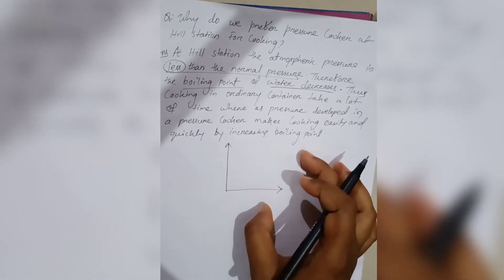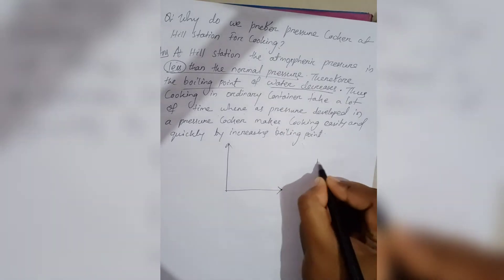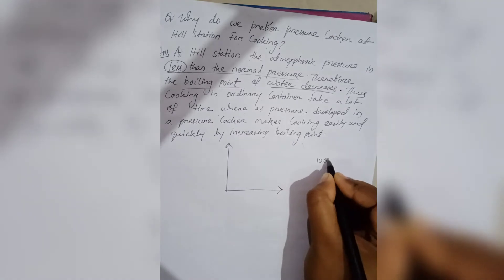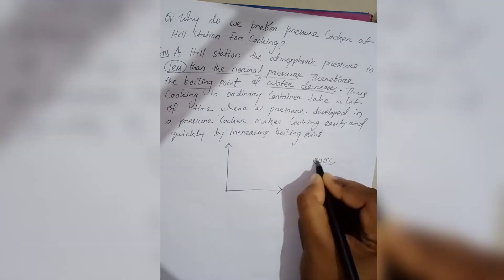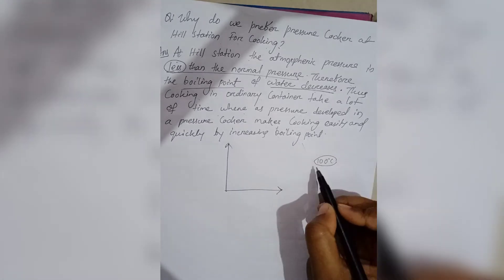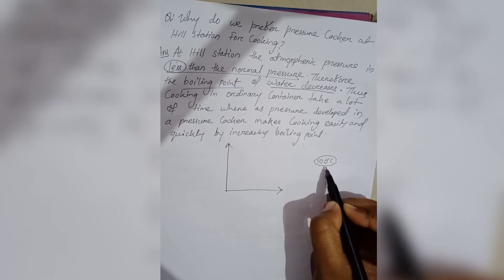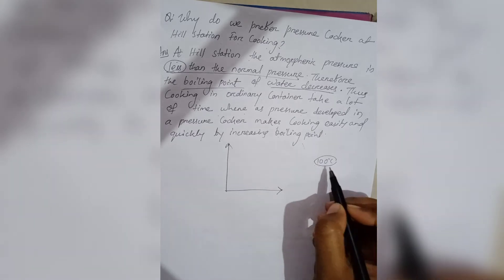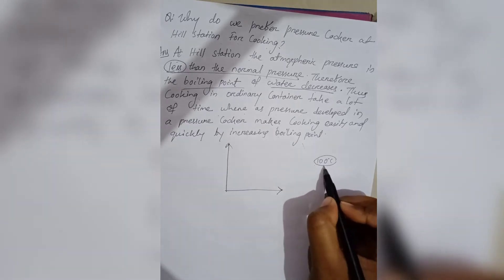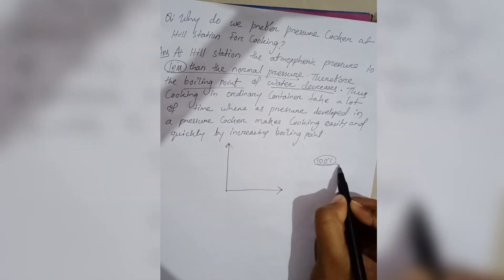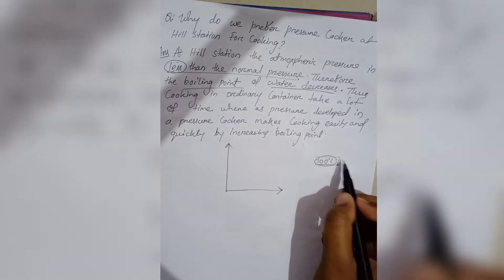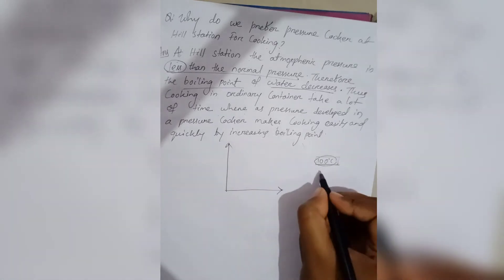The boiling point of water is 100 degrees centigrade. This is for normal atmospheric pressure.